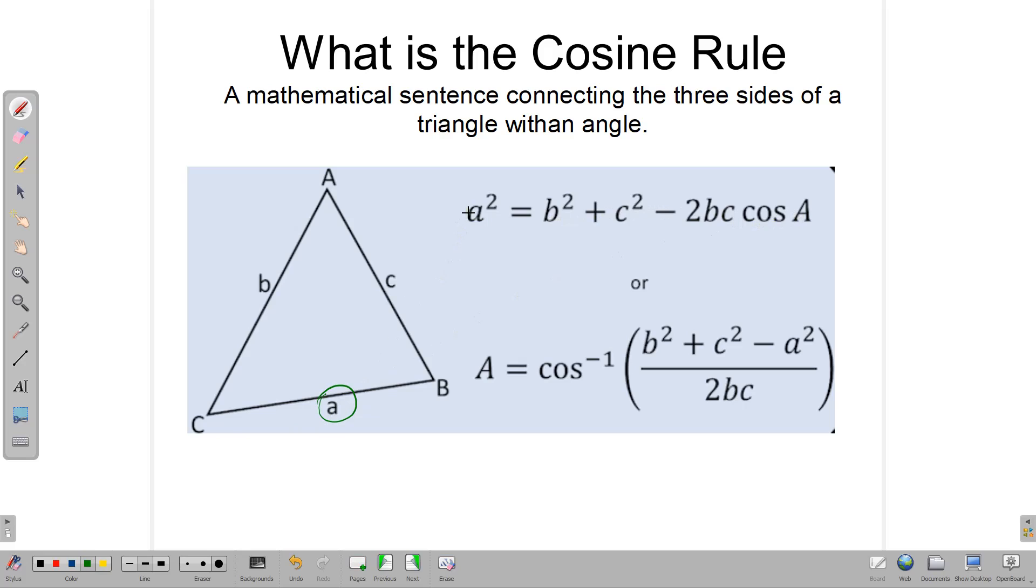Notice that we start with a, and then we write a in terms of the other two sides, b and c, and the cosine of the angle opposite to a. We could write this from another side as well. If we want to define c, for example, then we would write c squared is equal to b squared plus a squared minus 2ba and the cosine of the angle opposite to c, which would be this angle here.